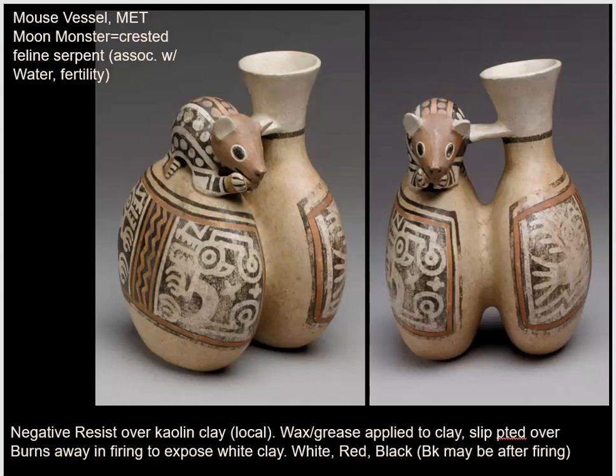The vessel we're looking at, in the color of the kaolin right down here, has another diagnostic feature of Recuay known by a number of different names. We've come to call it a moon monster — it appears to be a crested feline serpent with an elongated tail. By ethnographic analogy — meaning what we know about other people from the region and their beliefs — this creature seems to be associated with water and fertility, which makes some sense. The image is consistent with stylistic elements associated with Recuay.